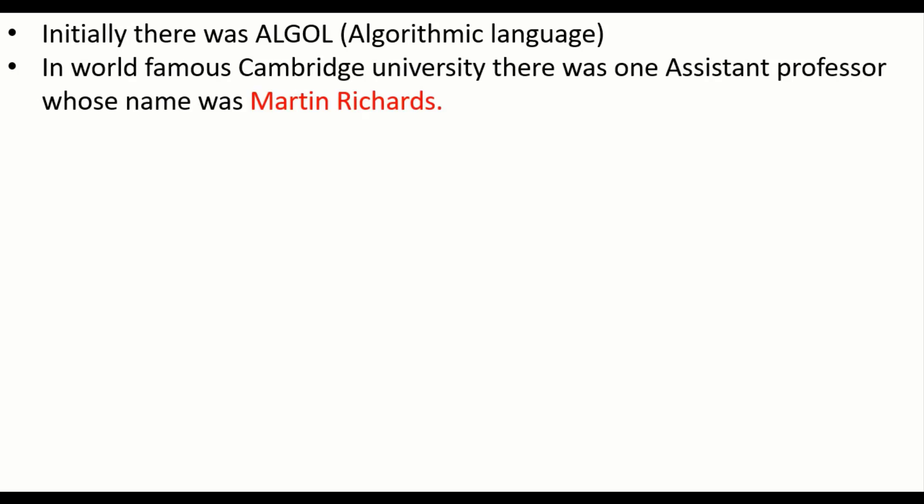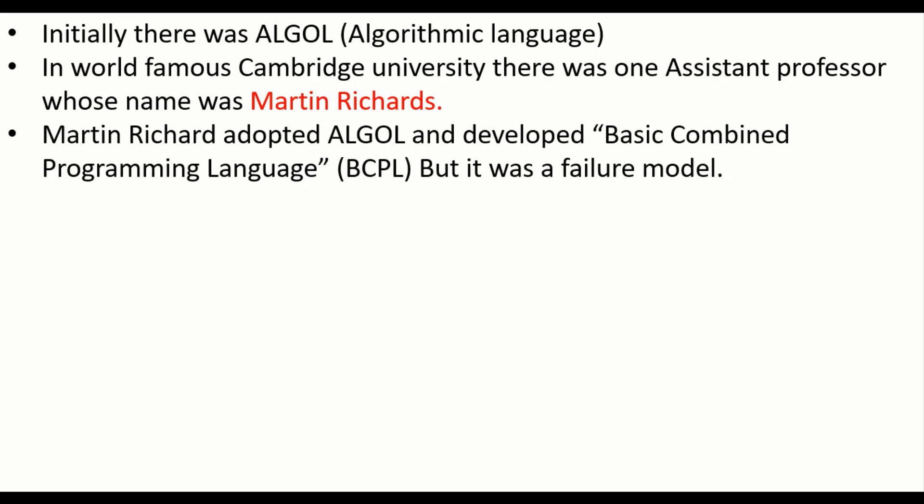Initially there was Algol language. Algol is nothing but algorithmic language. In world famous Cambridge University, there was one assistant professor whose name was Martin Richards. Martin Richards adopted Algol language and developed basic combined programming language, called BCPL in short.